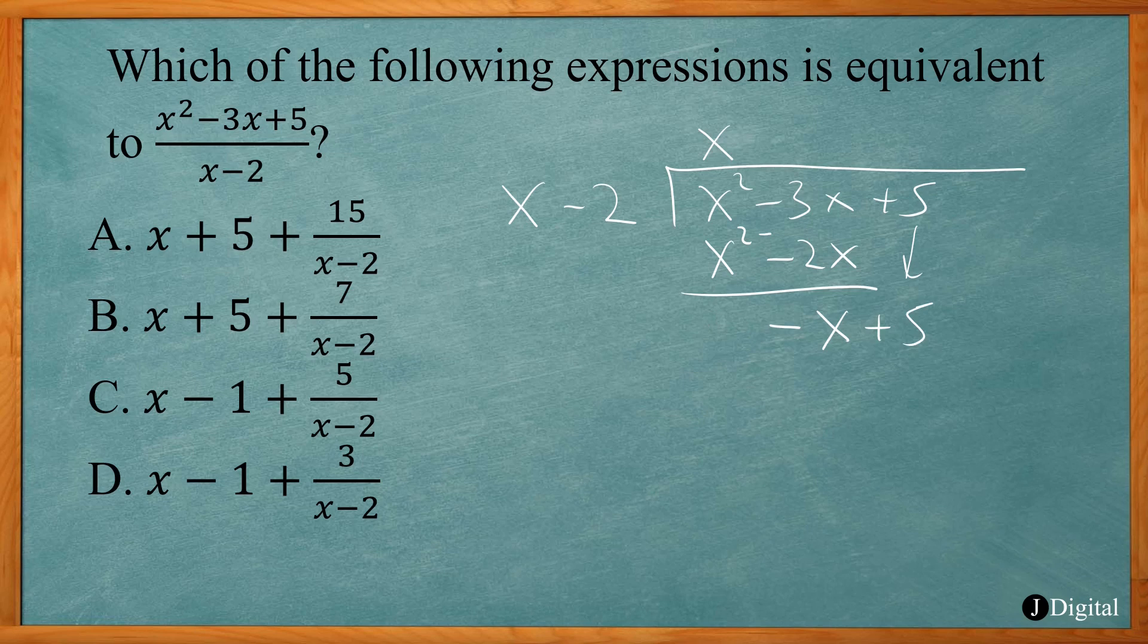So now you have negative x plus 5, so you do it again. What do I need to multiply x by to give you negative x? I need negative 1. So negative 1 times x is negative x, and negative 1 times negative 2 is positive 2.